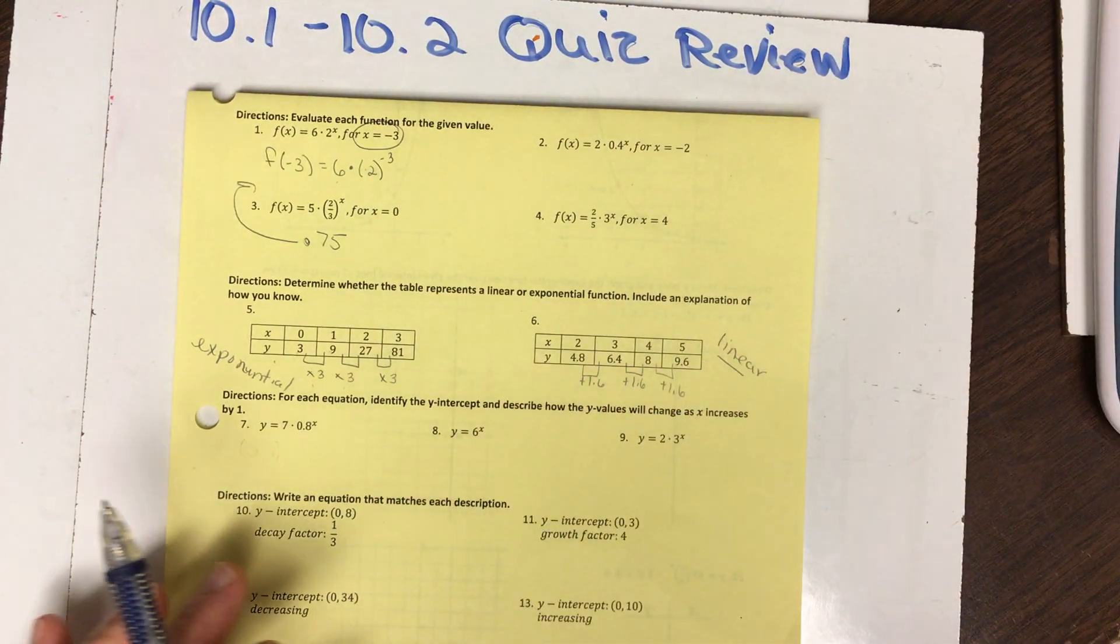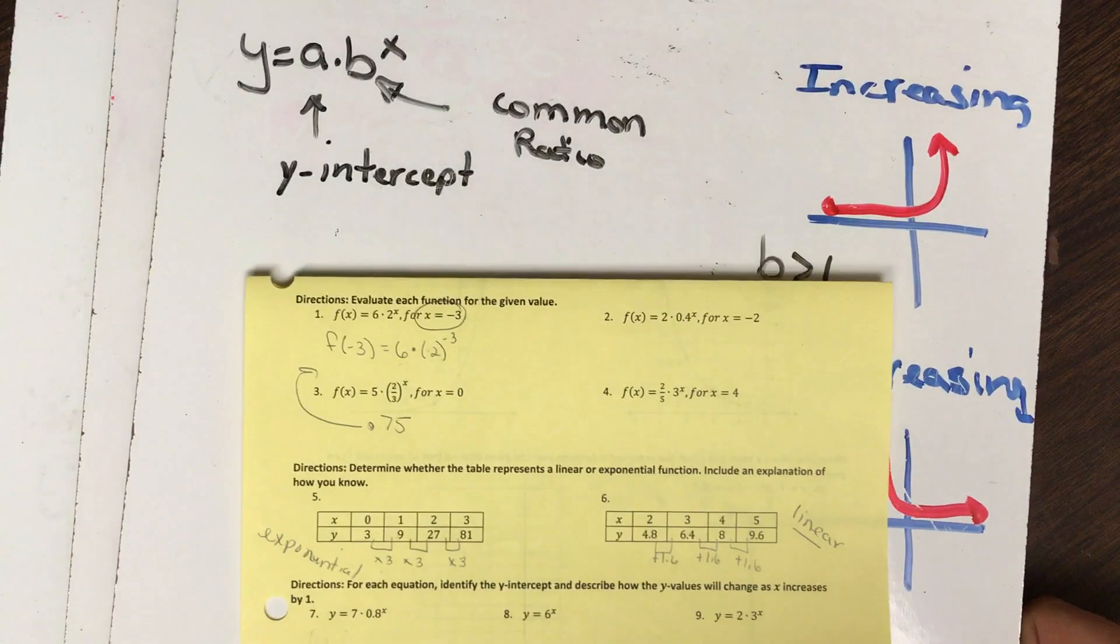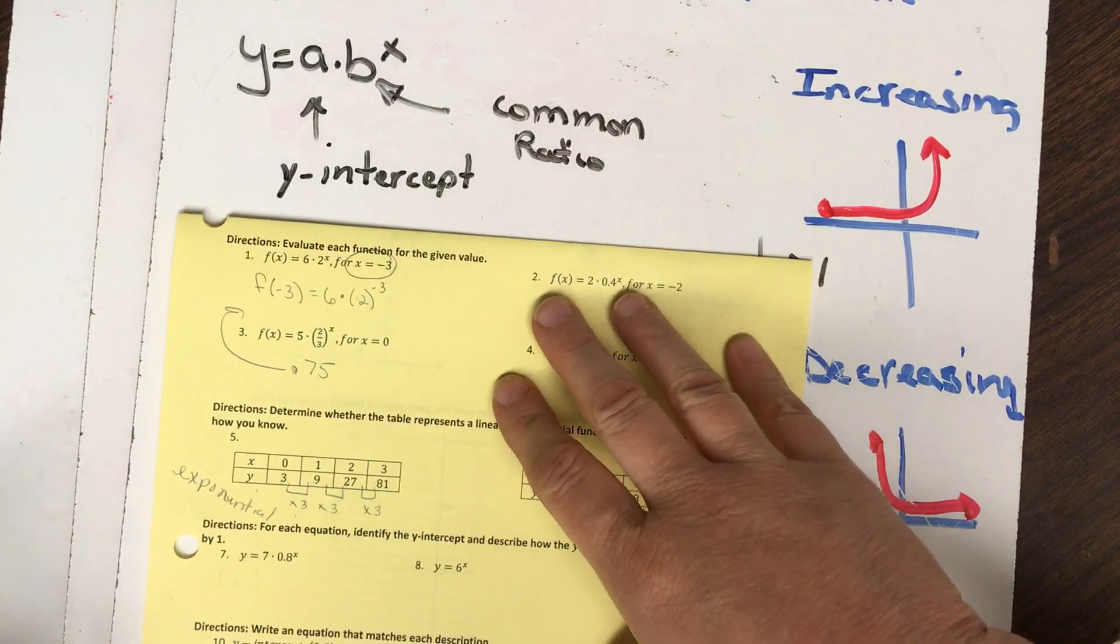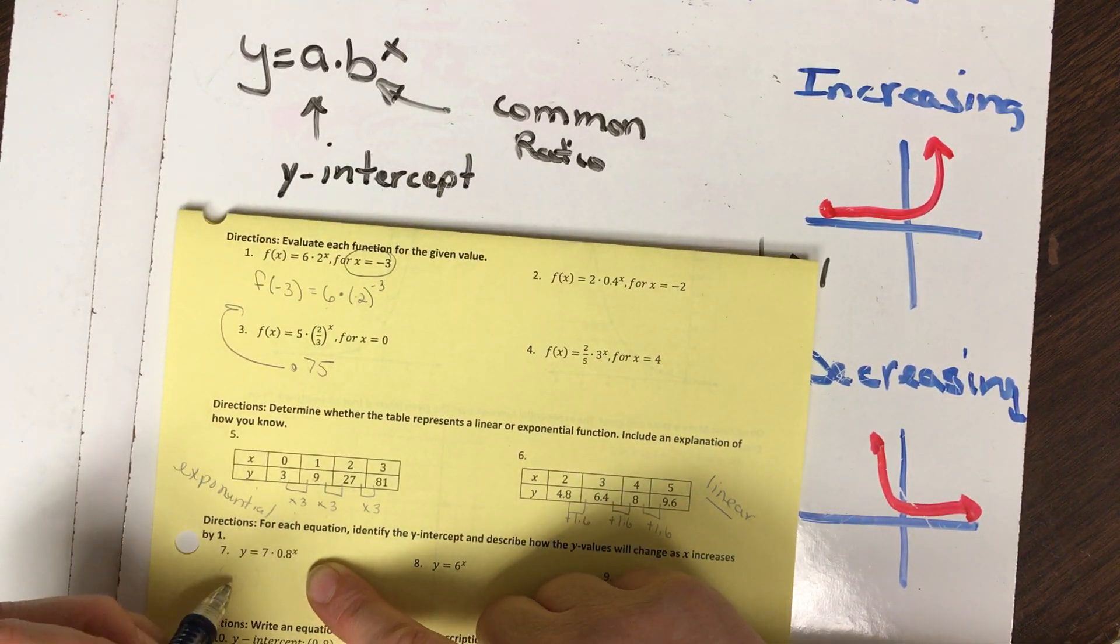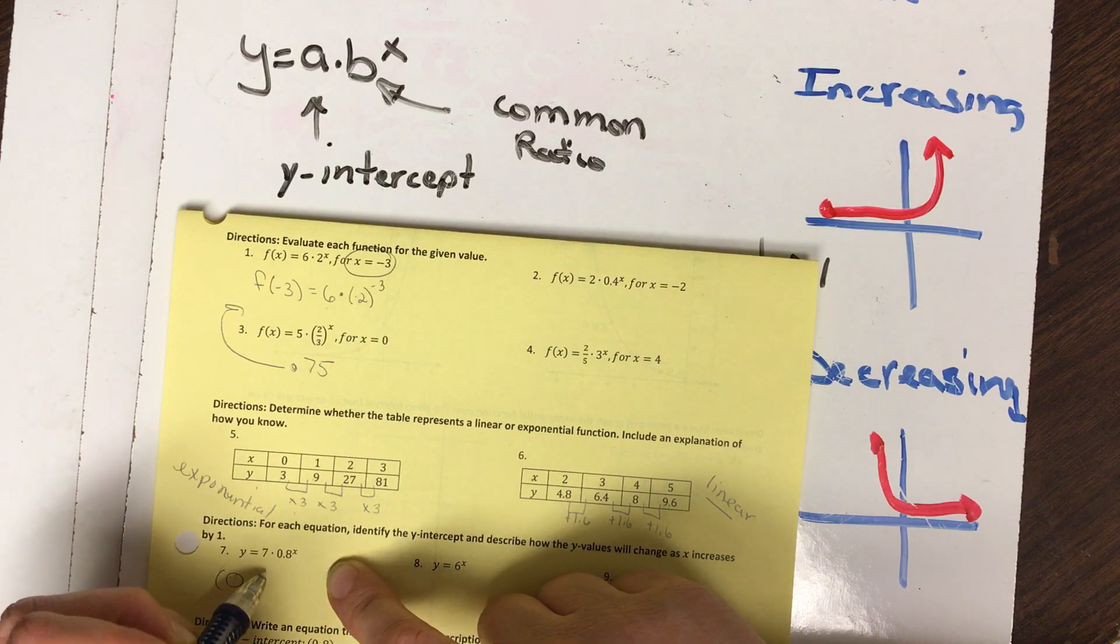Identify the y-intercept. Alright, so back to my board from a previous video. The y-intercept is my first number, so in this equation, my y-intercept is 7. But we need to write it as an ordered pair.